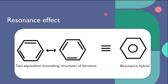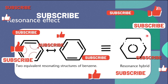We can also explain the stability of benzene in terms of resonance effect. Benzene has equivalent resonating structures, but the perfectly symmetrical structure of benzene indicates that it exists as a resonance hybrid. The C-C double bond moves around and there is a dispersal of electron density, which results in its lack of reactivity towards electrophilic addition reactions. Please leave a comment if you have any questions. Thank you for watching.